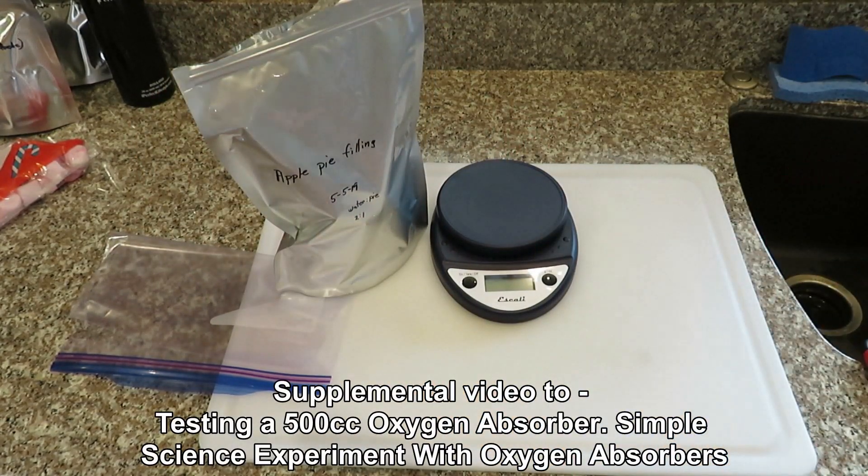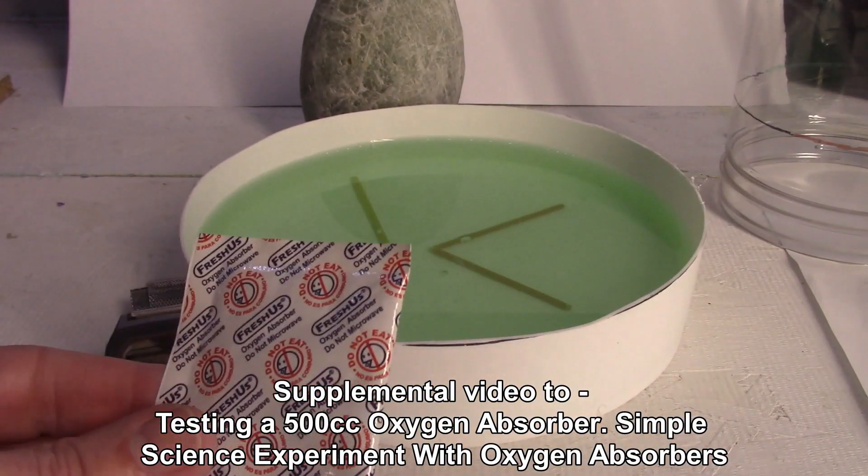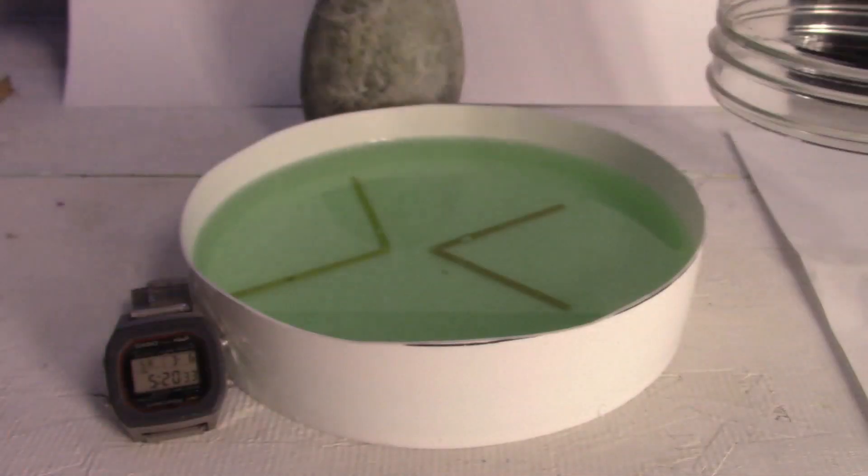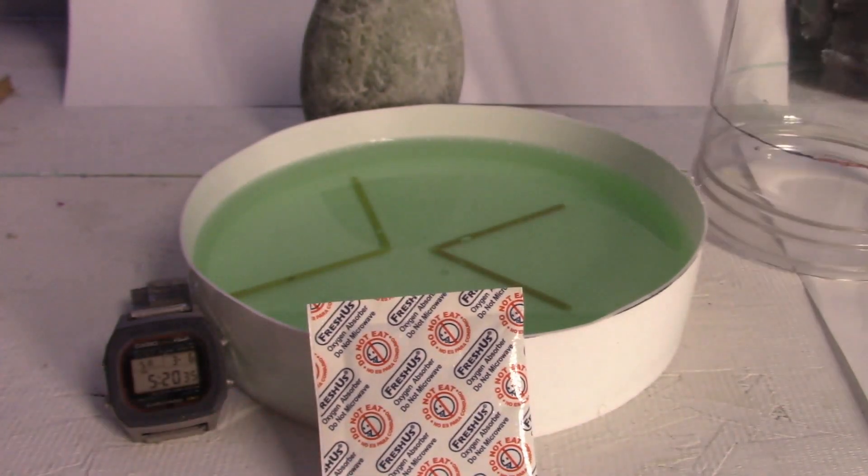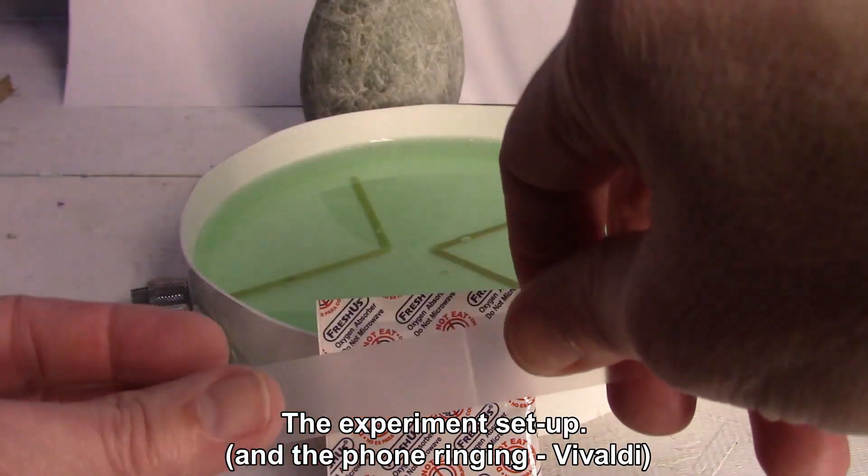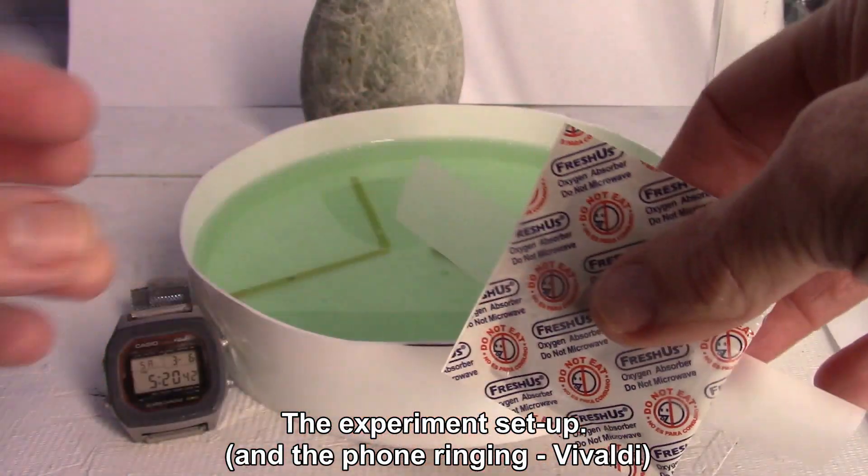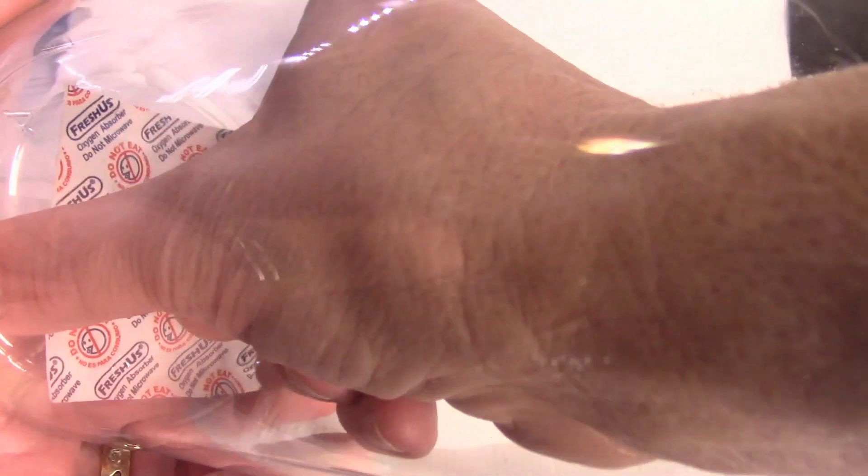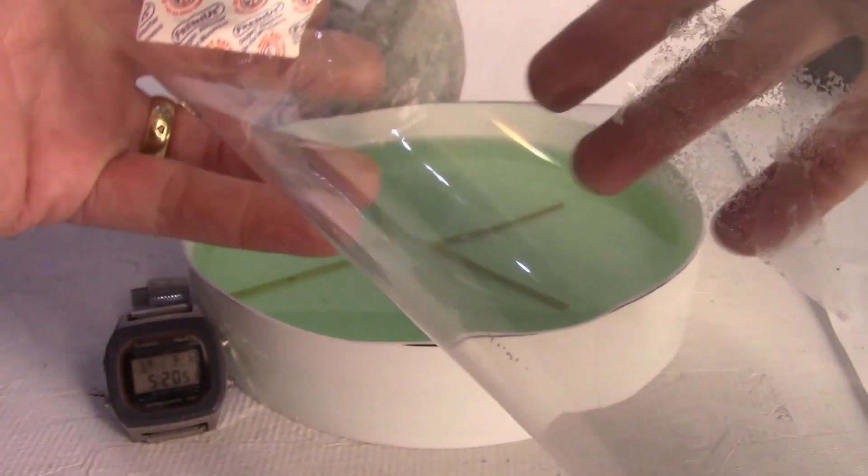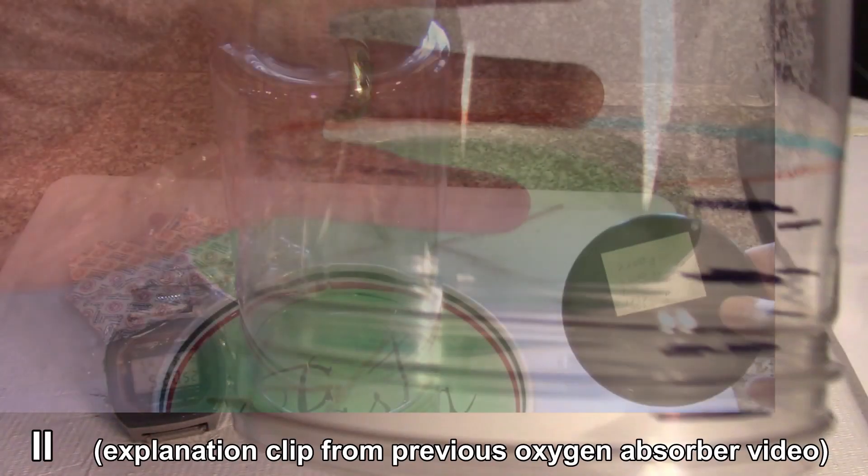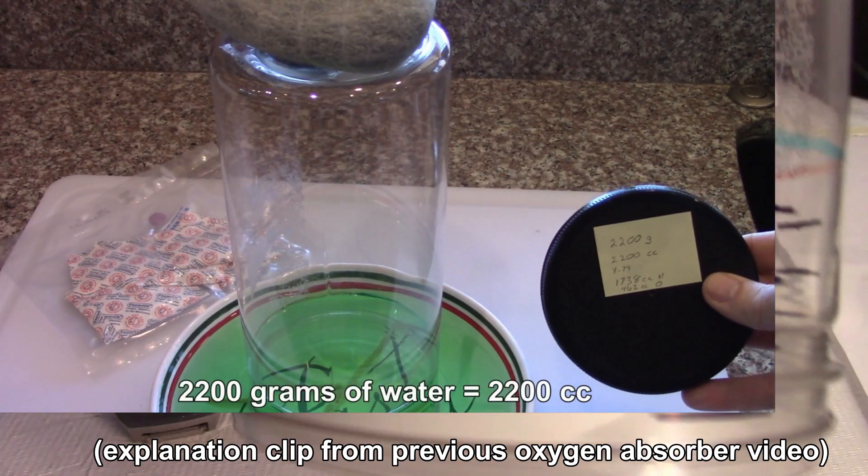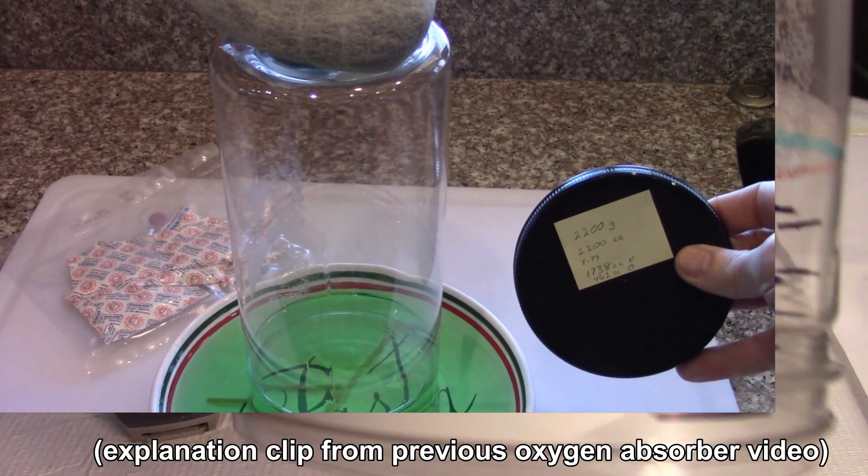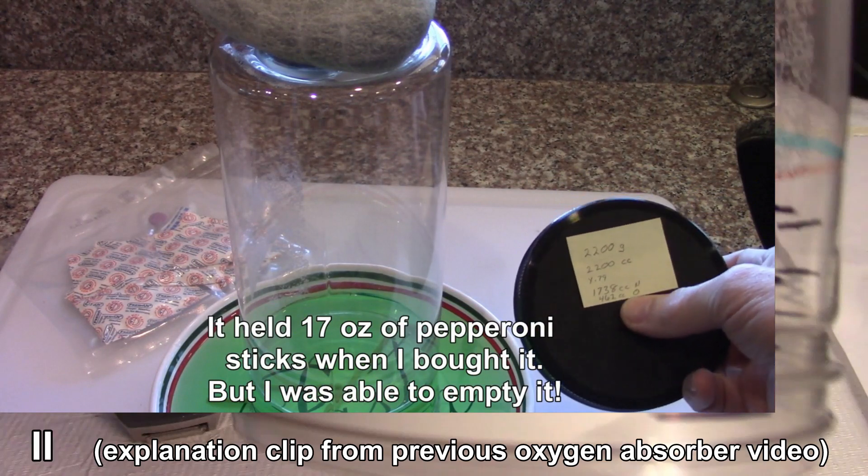Okay, get the oxygen absorber out of the apple pie bag, take a piece of tape, and tape it to the inside. The container holds 2200 grams which also equates to 2200 CC. I did the math and came out with 462 cc's of oxygen, carefully measured that, and put a mark on it.